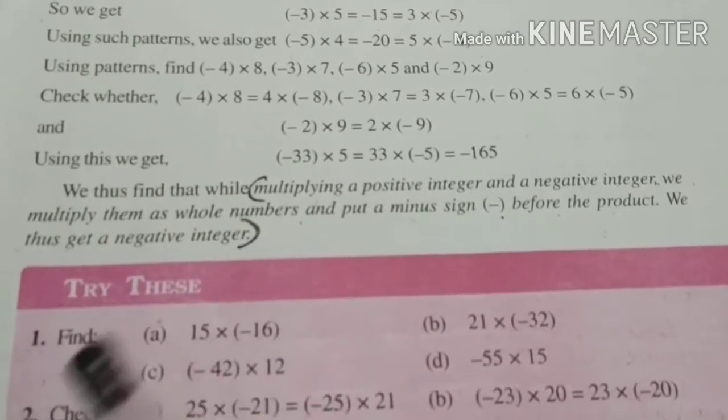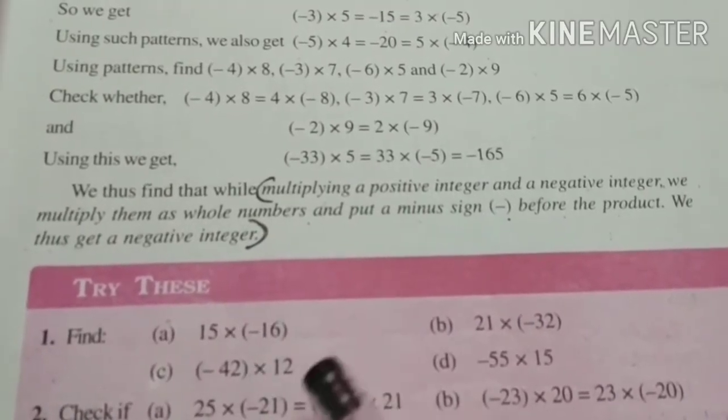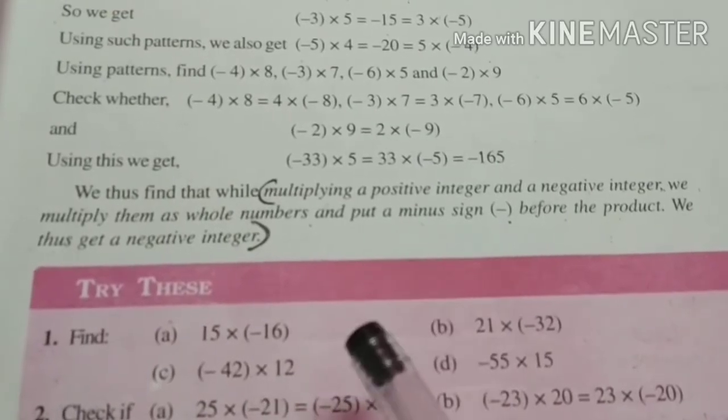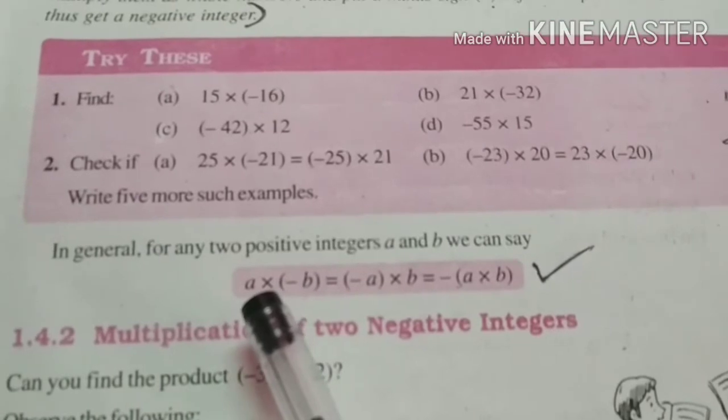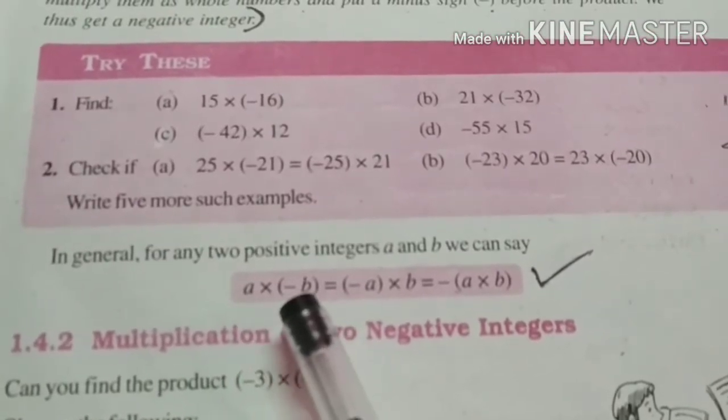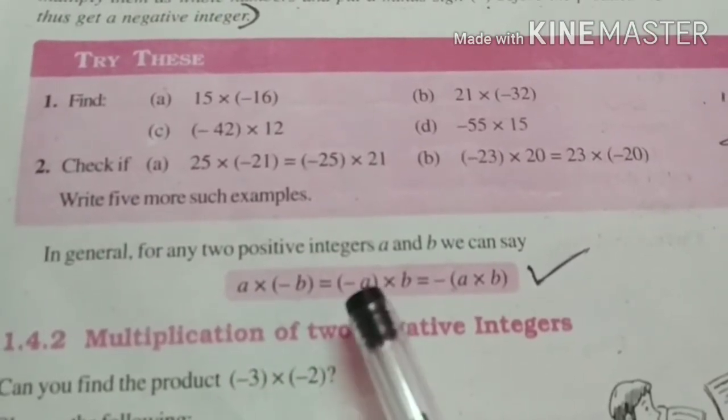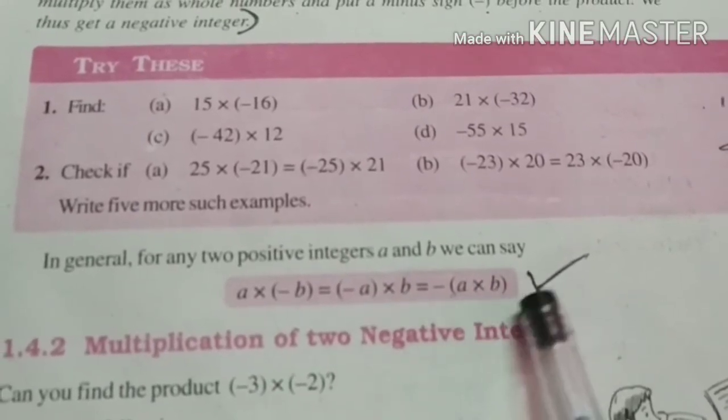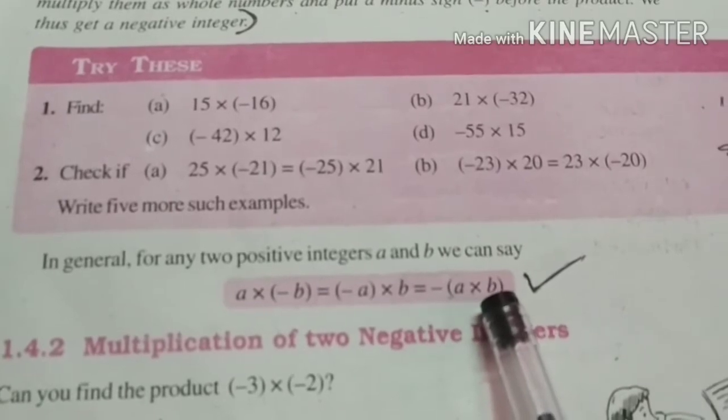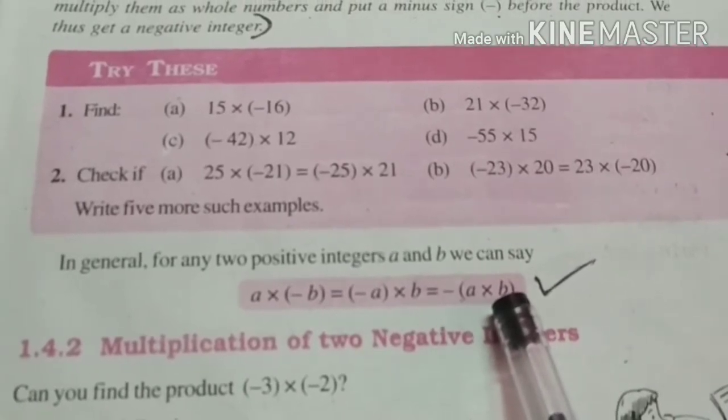So when we multiply a positive and a negative integer, we get a negative integer in answer. You can learn this: a into minus b is equal to minus a into b is equal to minus bracket a into b. So we get negative integer.